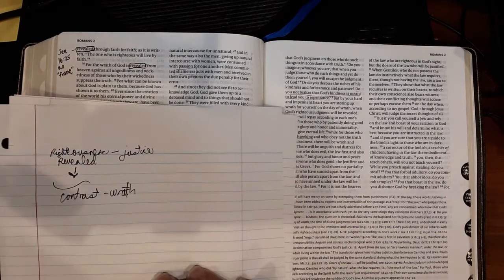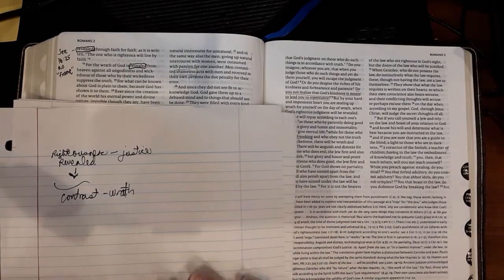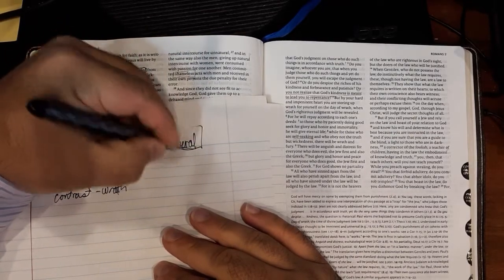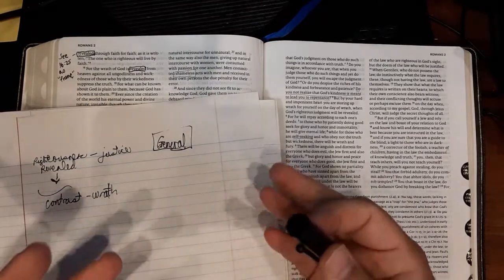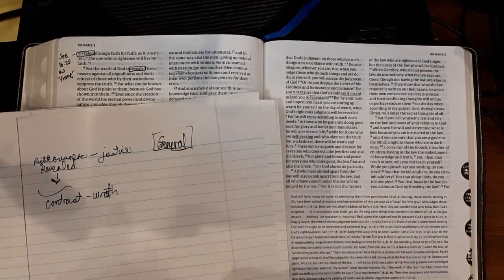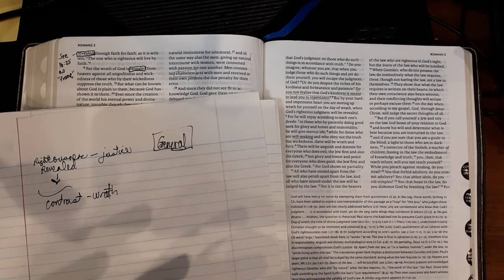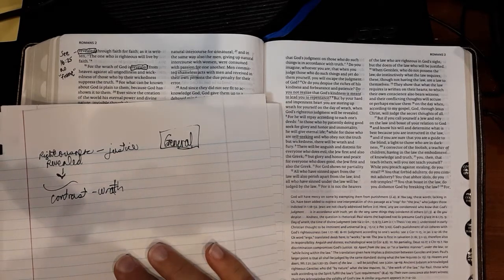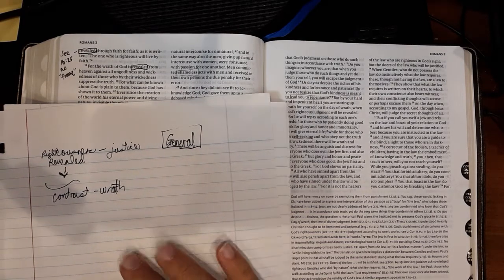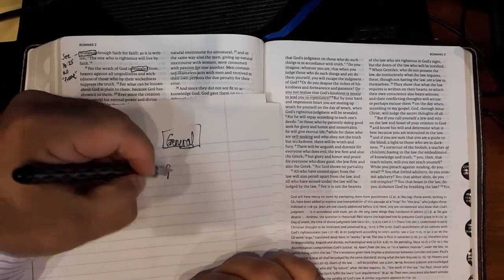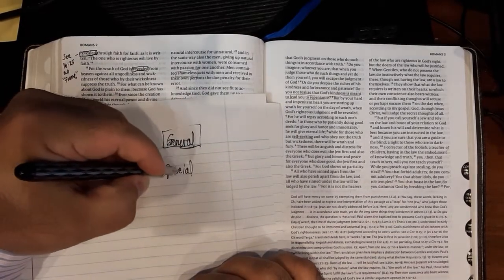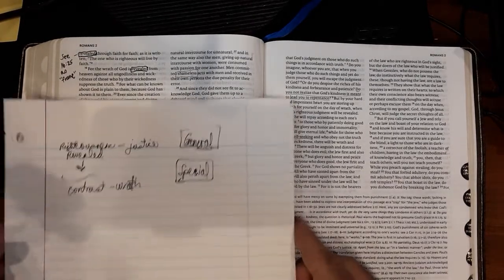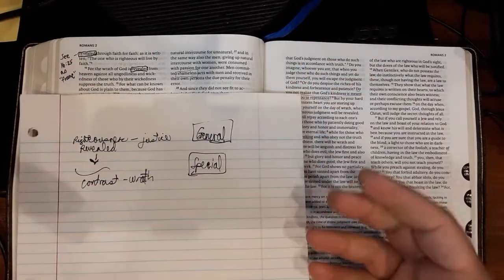In theology, there are two types of revelation. There's what's called general revelation, which is the revelation that God reveals himself in nature, in various things like beauty, art, that general sense of spirituality that all of us are born with. And then the second type of revelation is special revelation in which God reveals himself in unique ways to unique people and through the Holy Spirit and through other means.